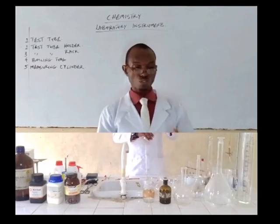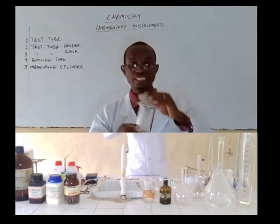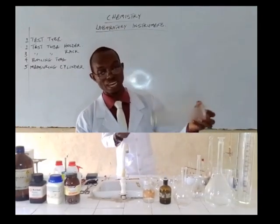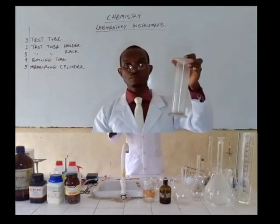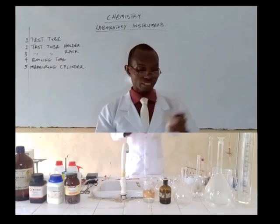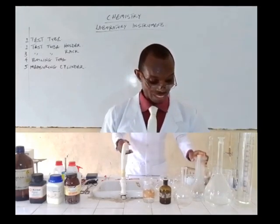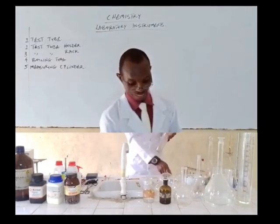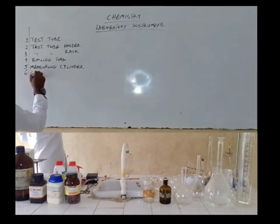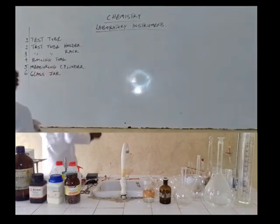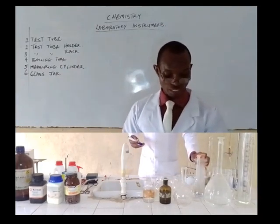Here we have what is called the glass jar — a jar with a lid. It is used biologically as well as in chemistry. In biology, it is used to hold specimens or organs. In chemistry, it is used to curtail gases, that is, to hold gases and prevent them from escaping. So the glass jar is used to contain gases.